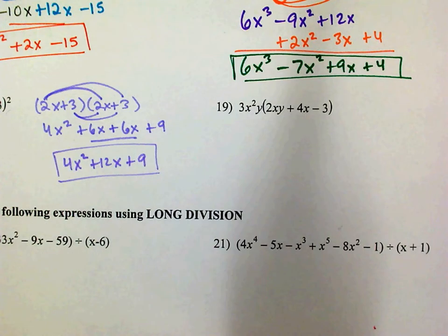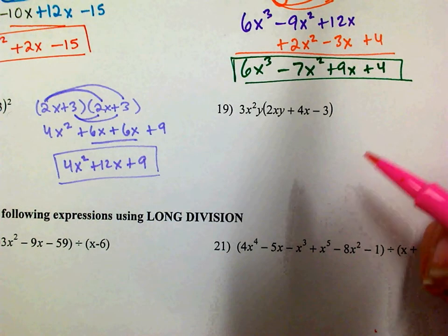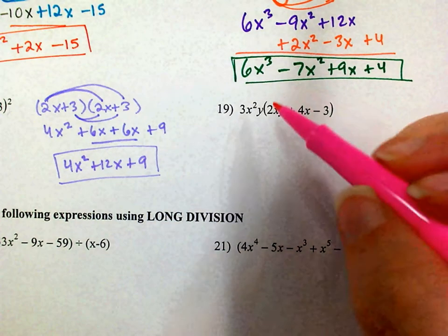On 19, you are multiplying 3x squared y times 2xy plus 4x minus 3. So we are going to distribute.